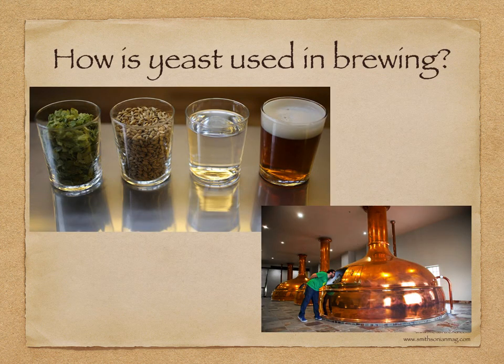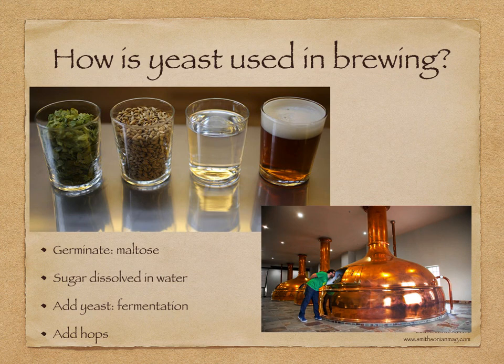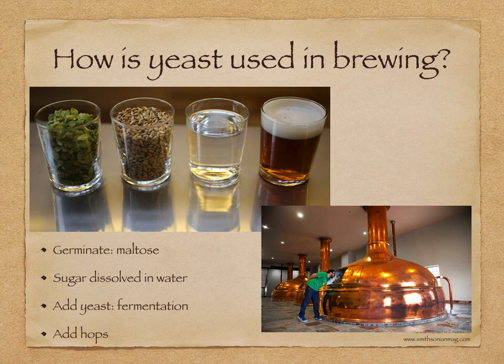How is yeast used in brewing? In beer production, barley grains are the source of the sugar. In a process called malting, these grains are allowed to germinate for a few days. During this time, enzymes break down the starch in the grains into sugars called maltose. This sugar can be dissolved in water to give a brown liquid. Next, in a process called mashing, yeast is added to the brown liquid and fermentation begins. To give the beer its characteristic bitter flavor, flowers of a plant are added, for example hops. Most beers are brewed on an industrial scale in large copper vats, and computer technology is used to carefully monitor and adjust the conditions in the vats.